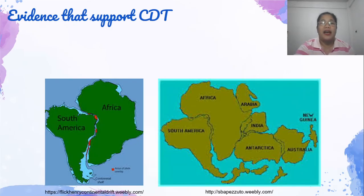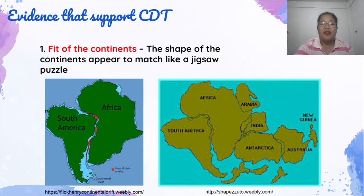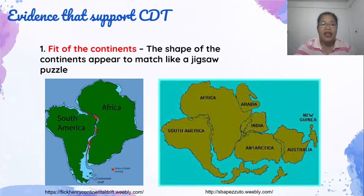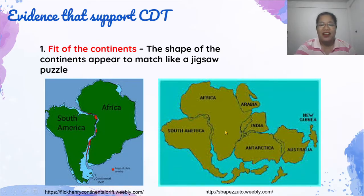Ano-ano ang mga ebidensya na nagpapatunay na totoo ang Continental Drift Theory? Una ay ang fit of the continents. The fit of the continents shows that the shape of the continents appear to match like a jigsaw puzzle. Ibig sabihin, yung mga gilid ng mga kontinente ay magkakatugma na parang isang puzzle at maaari nating buuhin, katulad ng nasa larawan.